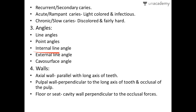An internal line angle is a line angle whose apex points into the tooth. An external line angle is a line angle whose apex points away from the tooth. It is based on the direction of the apex: toward the tooth means internal; away from the tooth means external.